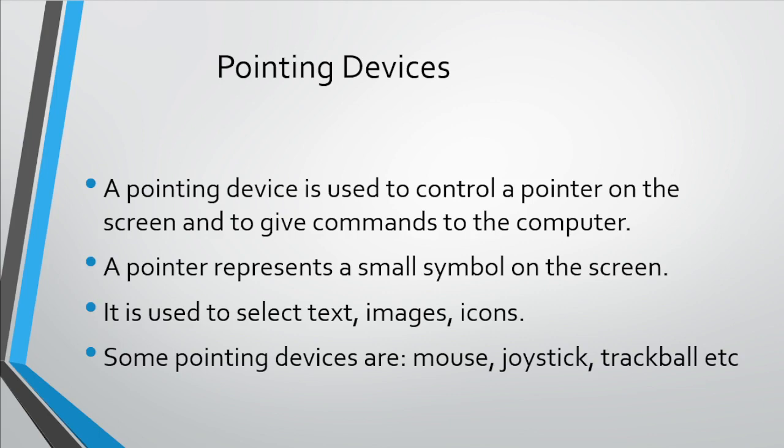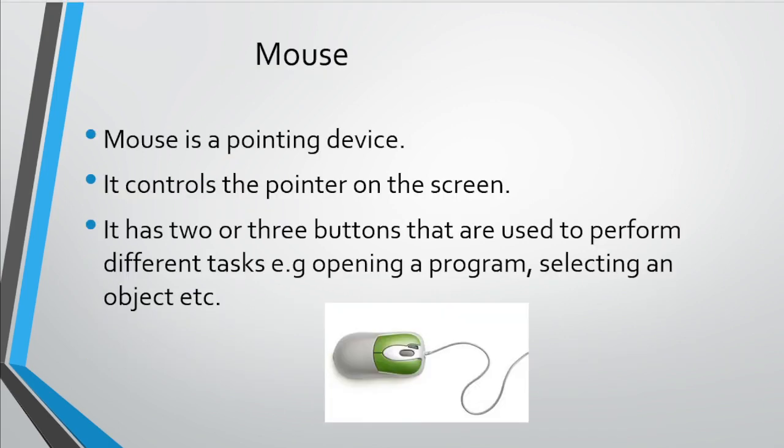Some pointing devices are mouse, joystick, and trackball. So students, let's discuss them. First one is mouse. A mouse is a pointing device. It is used to control the cursor or pointer on the screen and to give commands to the computer.